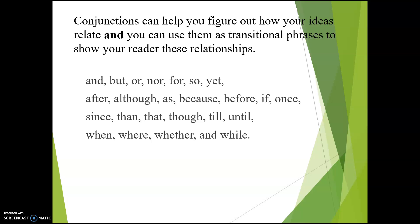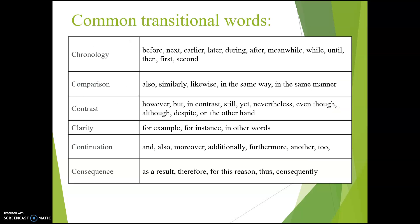Conjunctions can help you figure out how your ideas relate, and you can use them as transitional phrases to show your reader these relationships. I've listed some here, and I've also listed a chart which you can think about — which types of words might help you build good transitions between your paragraph ideas. I've included chronology, and we also have many different forms of AND. Those words are actually useful, but we just don't want to rely on them alone. We don't want to rely just on AND, or just on 1st, 2nd, and 3rd, because those end up making very listy structures without giving us room to look at interesting relationships and build a more dynamic structure.